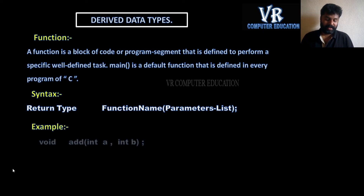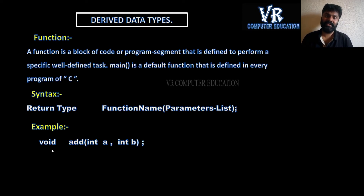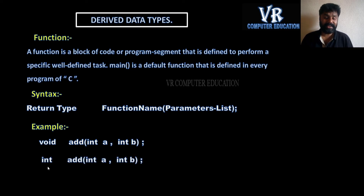Example: void add(int a, int b) — here void is the return type, meaning the add function will not return any value. void means empty. If you write int add(int a, int b), the return type is int, meaning this add function will return an integer value. That is the meaning of function.